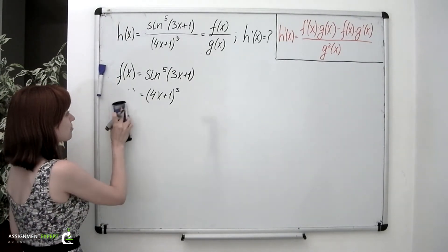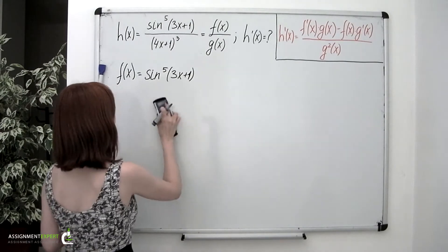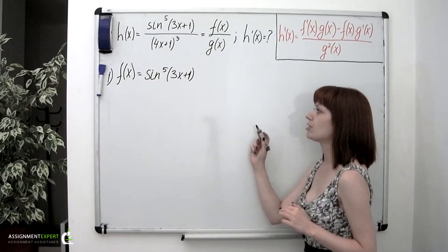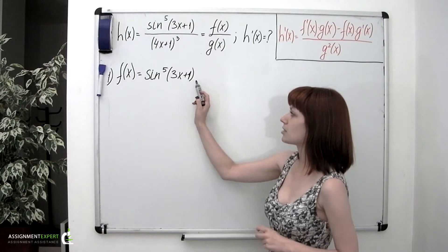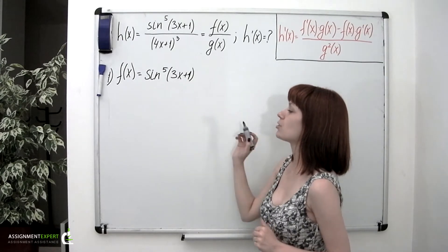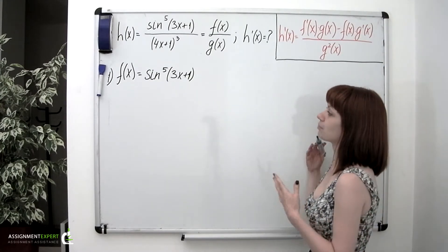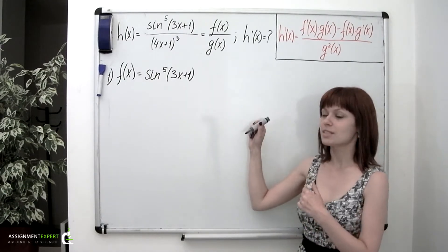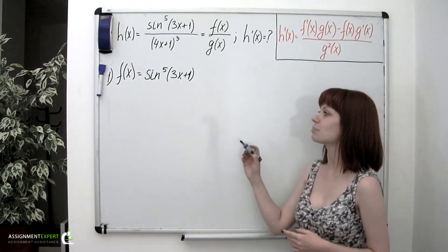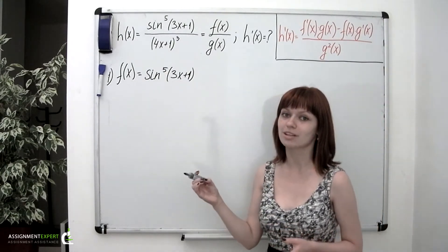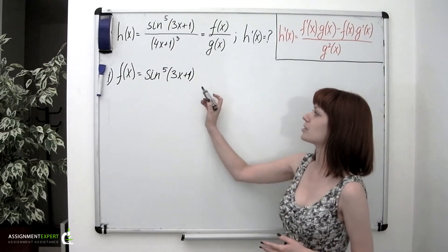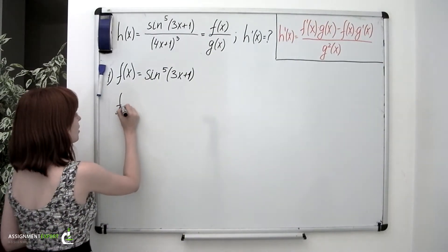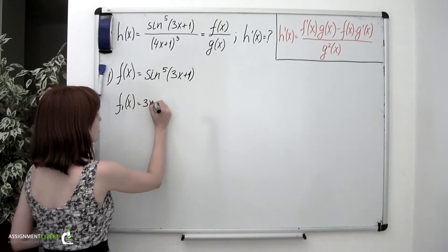Let's consider f of x first. Now, f of x is a composition of three functions: a polynomial in the brackets, the sine function, and a power. Prior to using the chain rule, we should figure out the order in which these functions are enclosed. We'll start with the polynomial in the brackets, so our f sub 1 of x equals 3x plus 1.